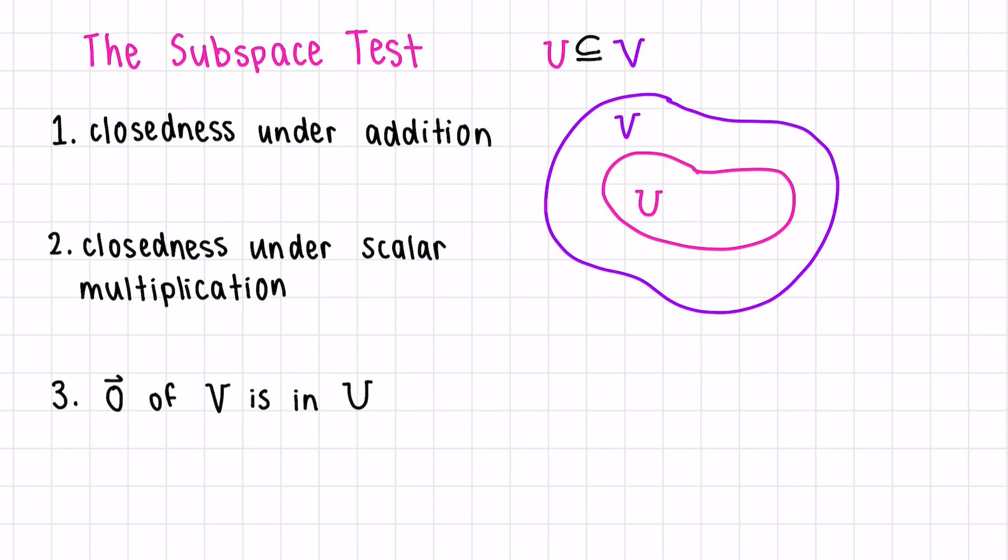You can take this shortcut if you know that U, your set, is contained within a larger vector space V. In order to check that U is also a vector space, you need to check three conditions.